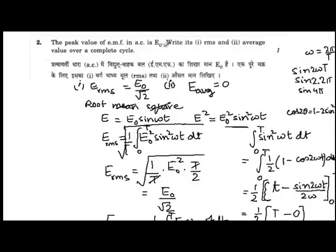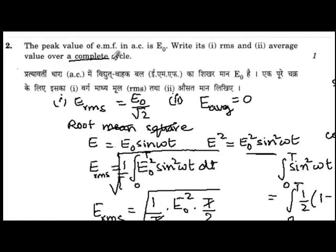Now the same question might have been asked slightly differently. Instead of over a complete cycle, they could have asked you over half a cycle. So what is the RMS and average value over half a cycle?